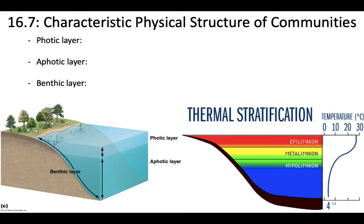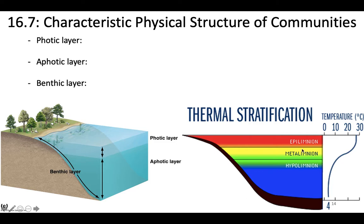In aquatic environments you generally have a photic layer where light can penetrate, and then some depth where light no longer really penetrates — the aphotic layer — which still gets fed by decaying matter falling from above. Many organisms can move between the photic and aphotic layers. Those are the three distinct stratifying layers in aquatic environments. You can also have thermal stratification: the epilimnion at the top, decreased light penetration in the metalimnion changing the temperature, and then the hypolimnion, which is cold and has very low light availability.